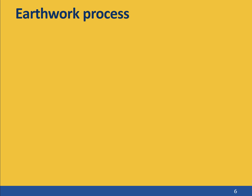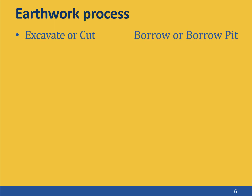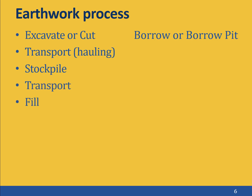The earthwork process generally follows a common set of steps. First, we cut or excavate the soil material from a borrow or borrow pit. The borrow or cuttings are then transported or hauled from the borrow pit. They are often stockpiled at a location somewhere between the borrow pit and the eventual fill area. When the material is needed, it is then transported again to the fill area. If there's no stockpile, the material is transported directly from the borrow area to the fill area.